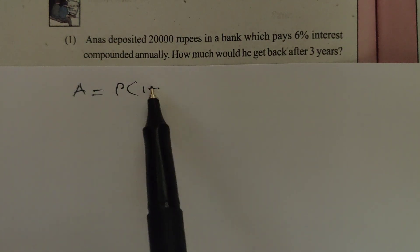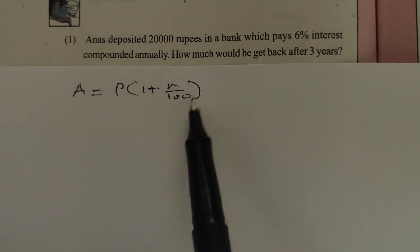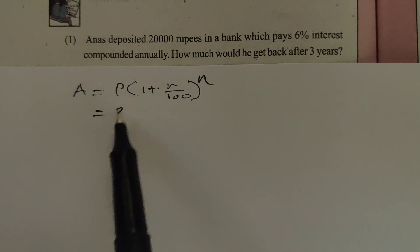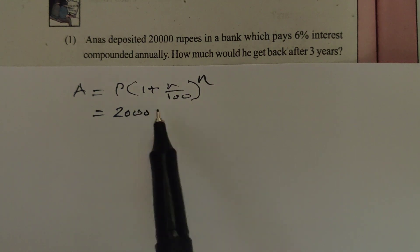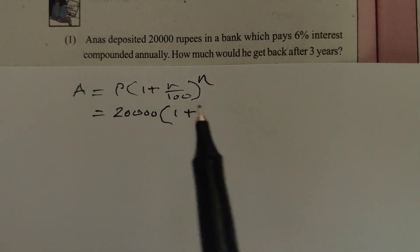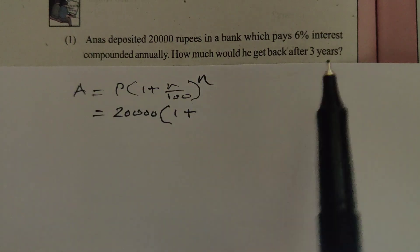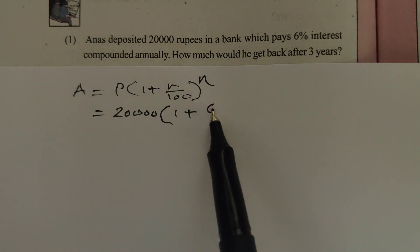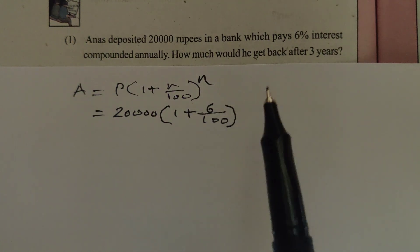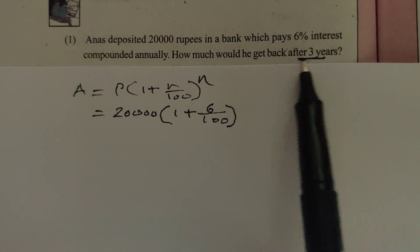The formula for compound interest is: Amount = P × (1 + R/100)^N, where P is the principal amount — here 20,000 rupees — R is the rate of interest, that is 6%, so 6 by 100.